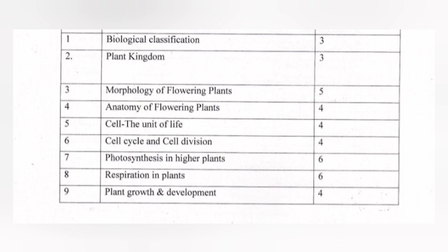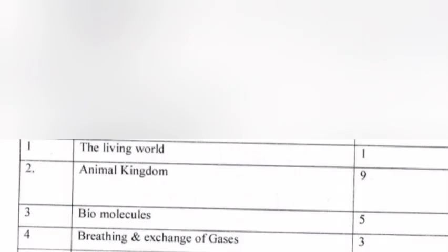Anatomy of Flowering Plants, Cell: The Unit of Life, Cell Cycle and Cell Division, and Plant Growth and Development carry four marks each. Biological Classification and Plant Kingdom carry three marks each. Zoology: Chapter one - The Living World, one mark. Chapter two - Animal Kingdom.